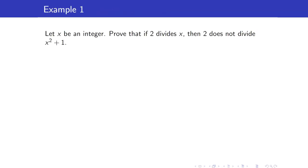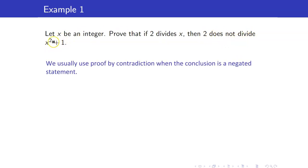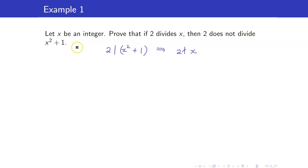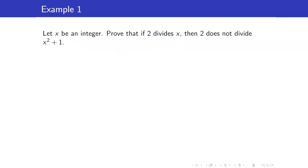Let us have our first example. Let x be an integer. Prove that if 2 divides x, then 2 does not divide x² + 1. Take note of our conclusion — we have a negated statement: 2 does not divide x² + 1. It's easier to work with statements that are not negated. If we prove the contrapositive, it will still have a negated statement: if 2 divides x² + 1, then 2 does not divide x. Since the contrapositive still contains a negated statement, we will just proceed by contradiction.